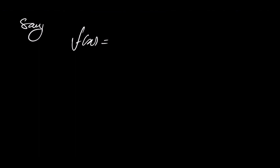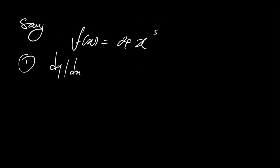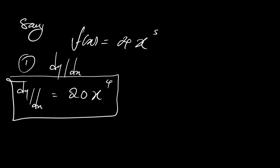Let me make it simple. Say you have a random function — let's call this function f of x. So let's say f of x is equal to 4x to the fifth power, and you are asked to find the first derivative. The first derivative is dy/dx. To find it, we apply the basic power rule: dy/dx equals 20x to the fourth, because 5 multiplies 4 to give 20, and we subtract the power by 1.